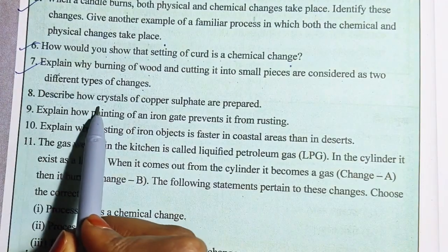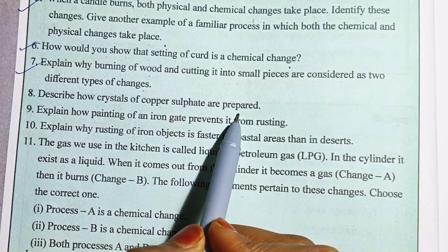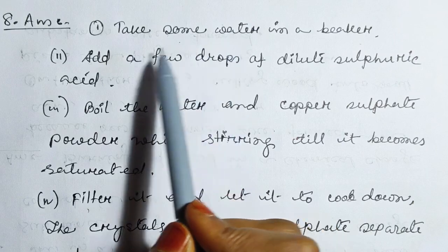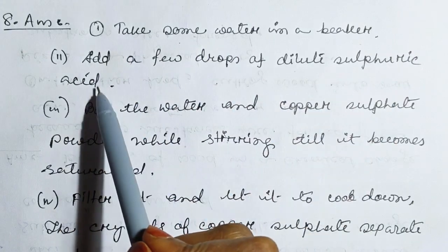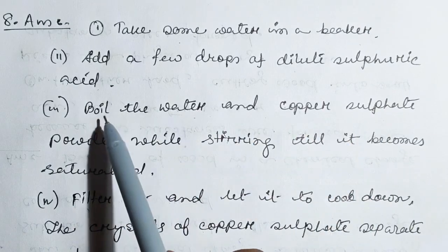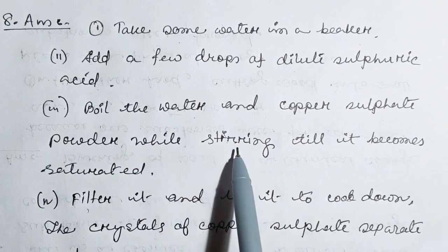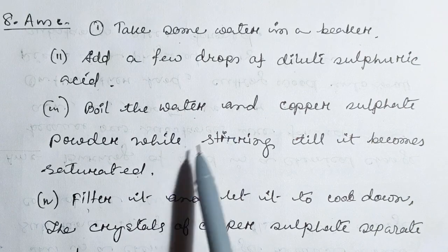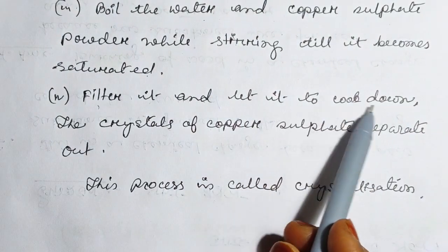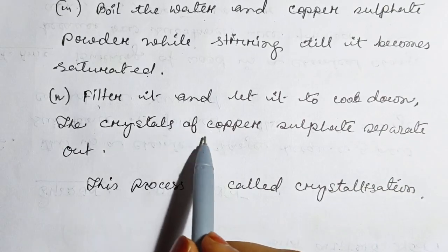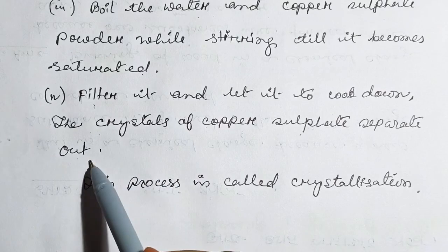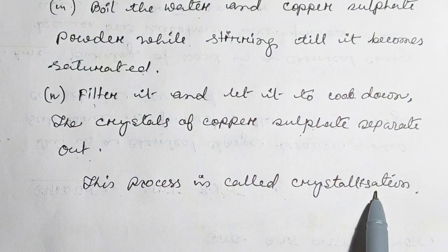Question number 8: Describe how crystals of copper sulfate are prepared. Take some water in a beaker and add a few drops of dilute sulfuric acid. Boil the water and add copper sulfate powder while stirring until it becomes saturated. Filter it and let it cool down. The crystals of copper sulfate separate out. This process is called crystallization.